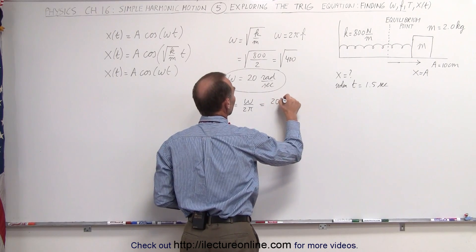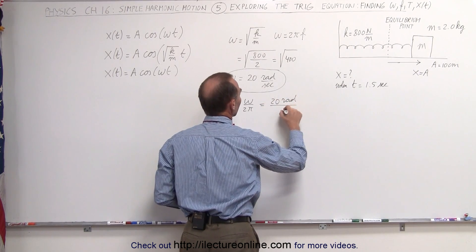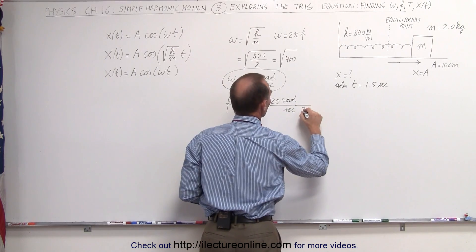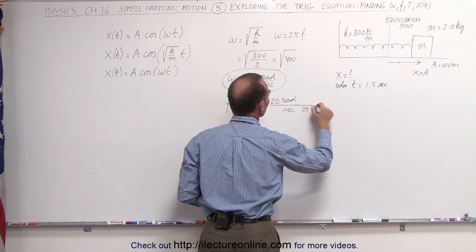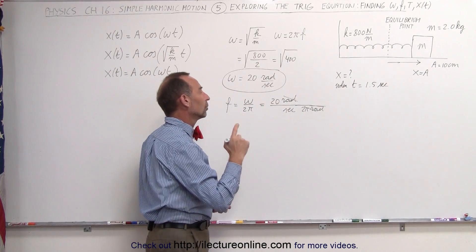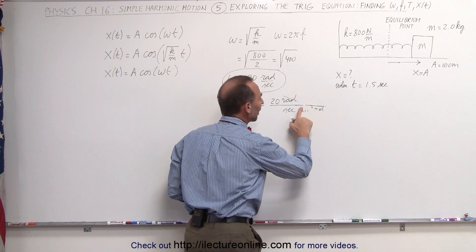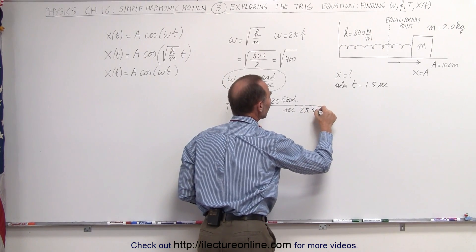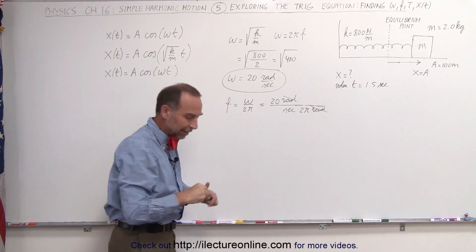This is equal to 20 radians per second divided by 2 pi radians. The radians units cancel out, but we still have the 2 pi there.